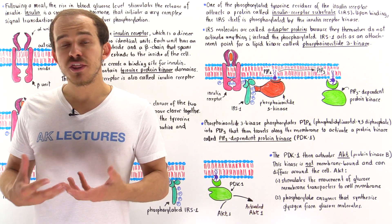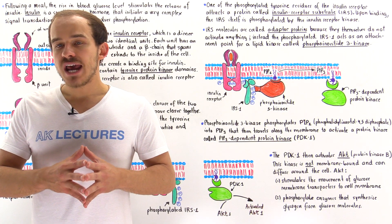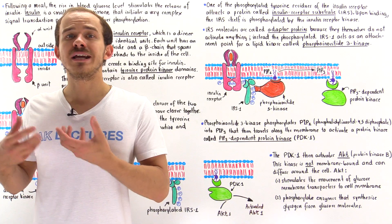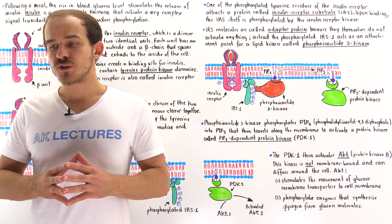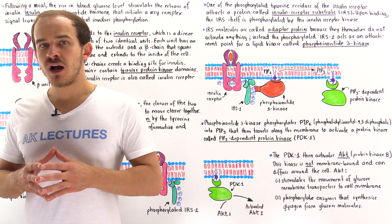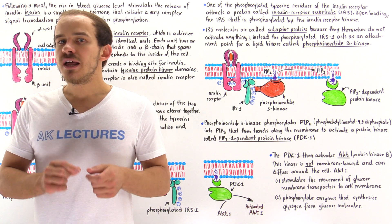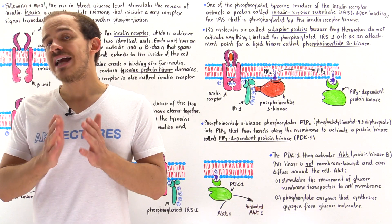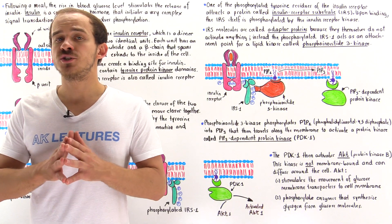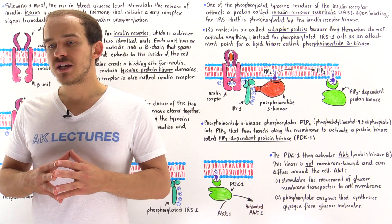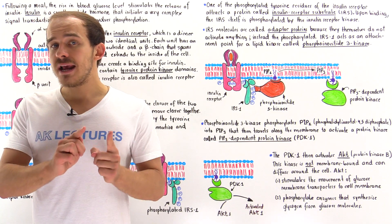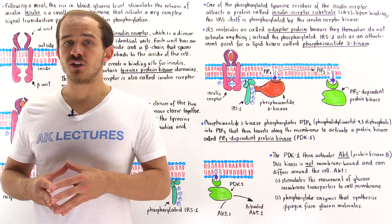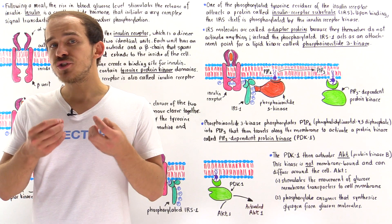Let's suppose we just had a meal rich in carbohydrates. Our body will begin to break down the carbohydrates, the polysaccharides, into their individual units — glucose molecules. Following a meal rich in carbohydrates, we see that inside our blood the glucose levels will begin to increase. The rise in concentration of glucose in the blood can actually be very dangerous and toxic to our body. The body responds by stimulating the beta cells of the islets of Langerhans, part of the pancreas, to release insulin molecules into the blood. Insulin is a small peptide hormone.